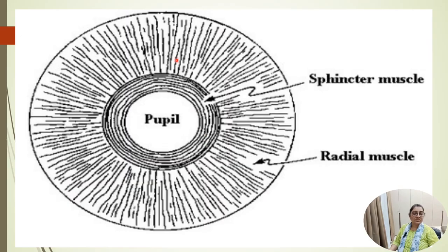The sphincter pupillae contains M3 receptors. When anticholinergic drugs are instilled, this muscle is blocked and paralysis of the sphincter occurs, while the radial muscle contracts — causing passive dilation of the pupil.